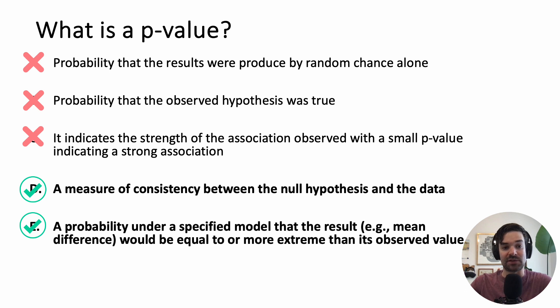Another way we can think about p-values is that it's a probability under a specified model that the result that you observed. So in our case, the difference it took to bike versus take the train to work would be equal to or more extreme than its observed value. So I hope that's helpful.